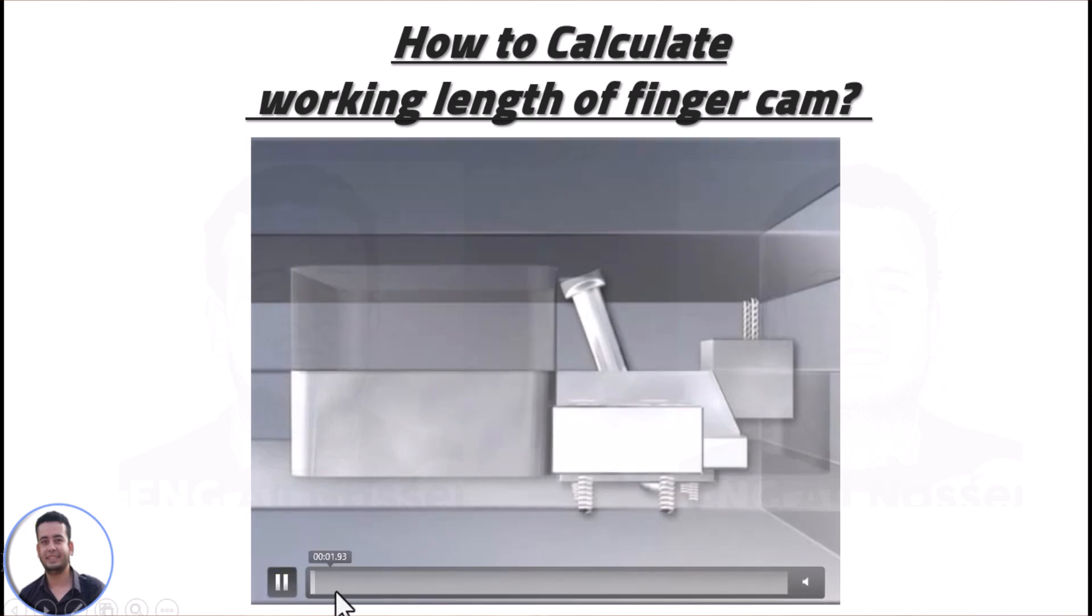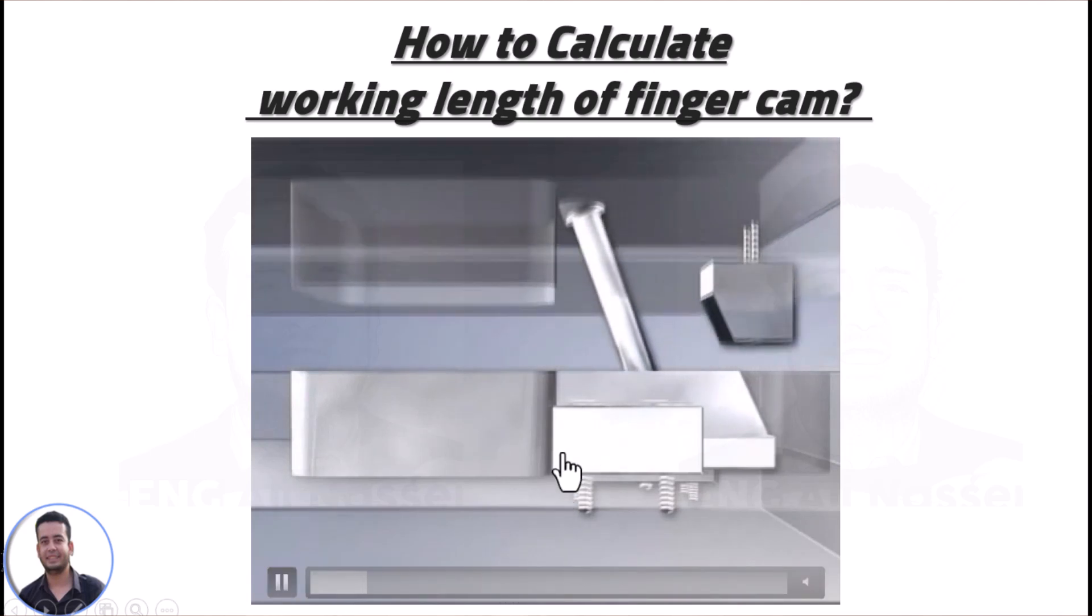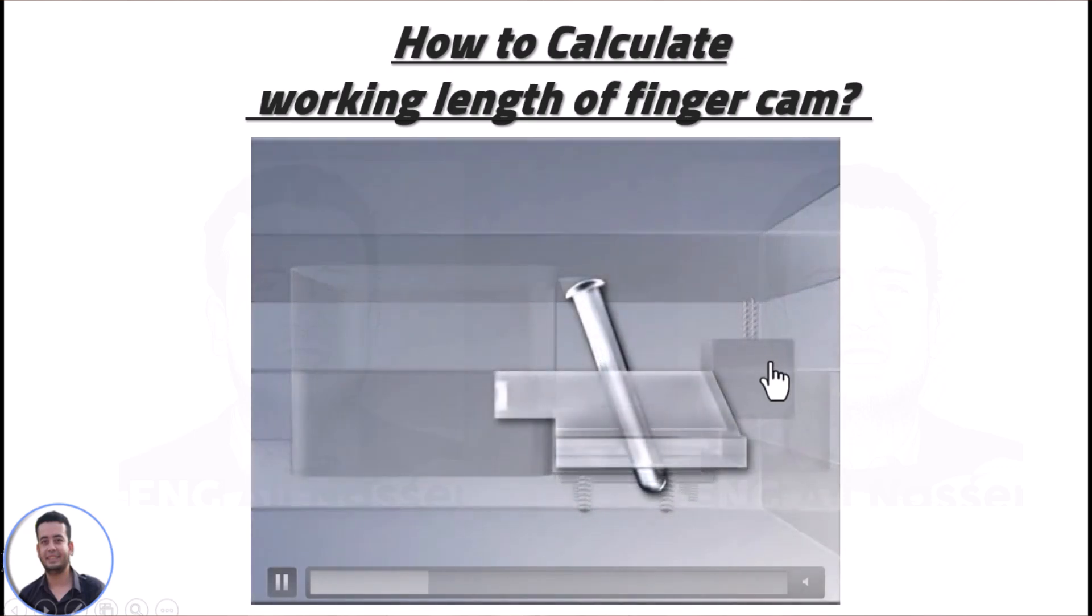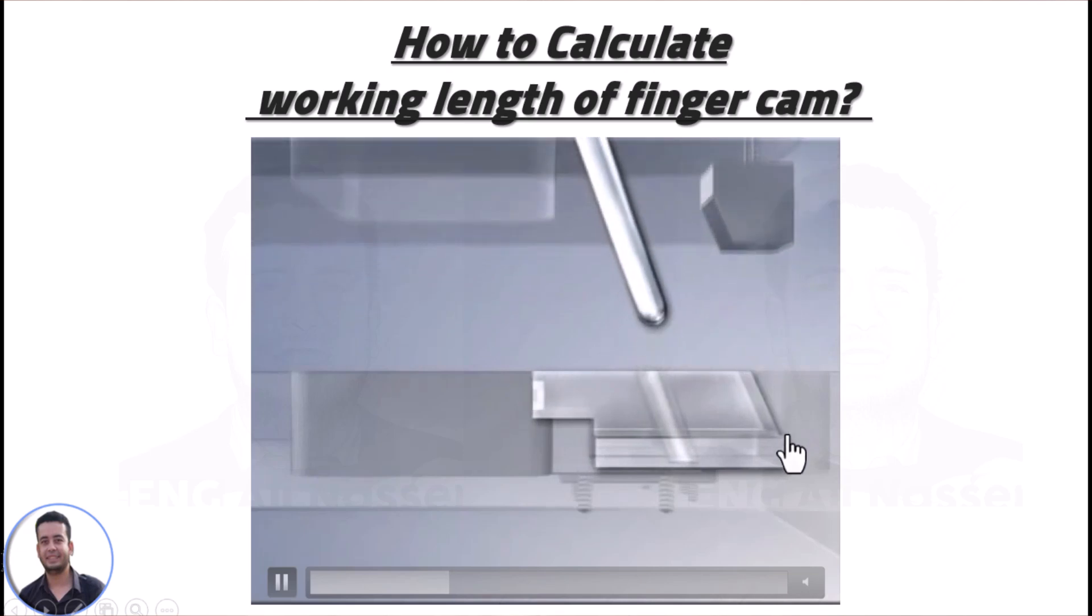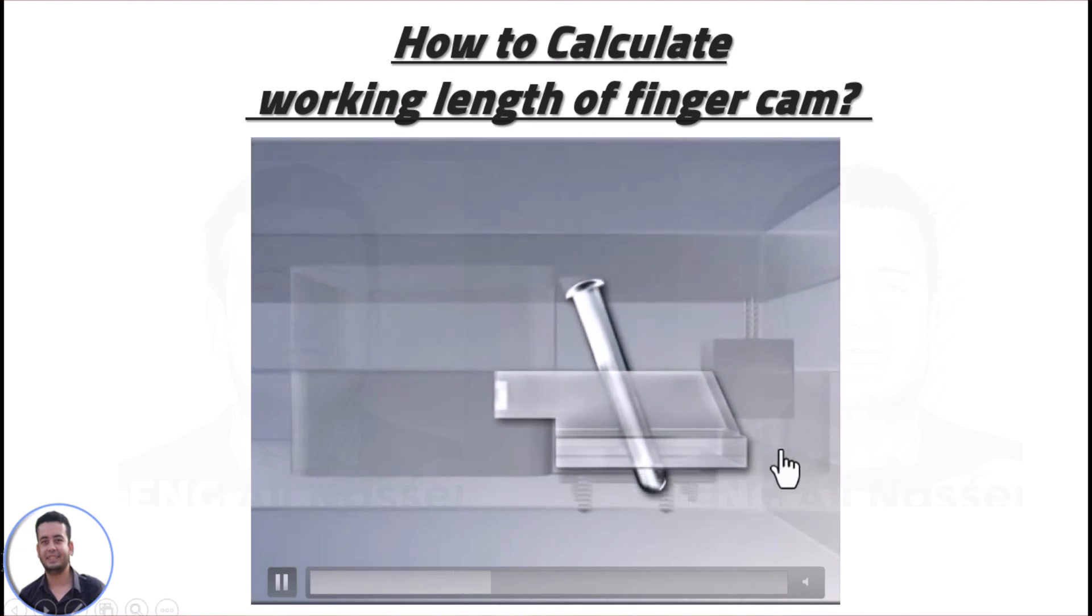Cam bin slide consists of a slide curve, cam bin, and a locking block or stop block, though it's not shown in this video. To calculate the length of engagement or working length of finger cam, it depends on several factors.